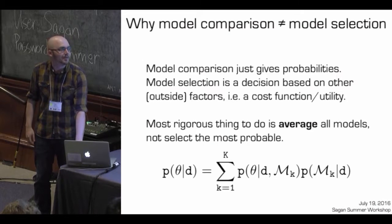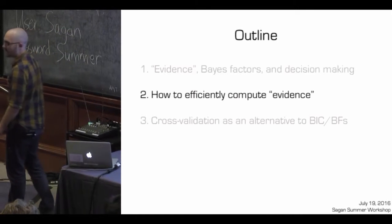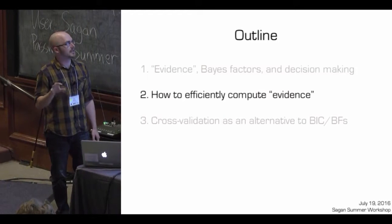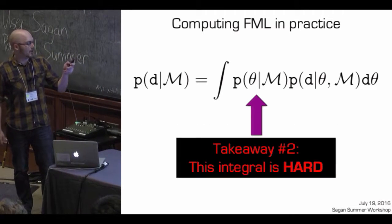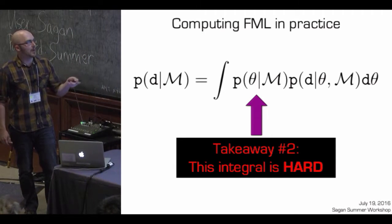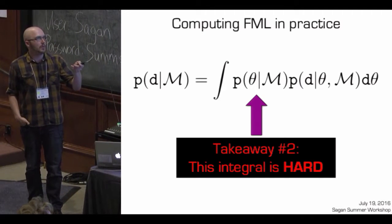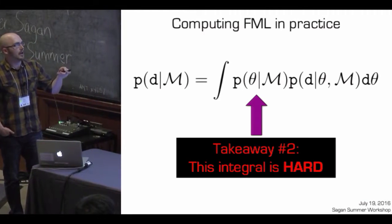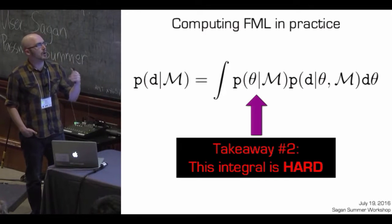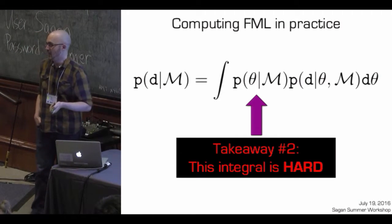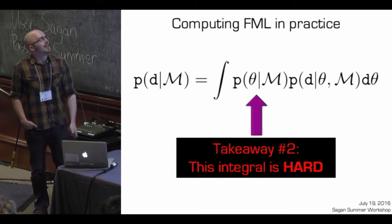Now let's look at how to efficiently compute some of these integrals. This is the integral we're trying to compute — it's over all d-theta. As Eric pointed out, this integral is very hard. If you only have one or two parameters maybe you can do it analytically, or use Monte Carlo integration. But once you get to three or more parameters — and some cases have thousands of dimensions — this integral becomes very, very difficult. That's why I like to call it the fully marginalized likelihood, because the acronym is FML and this thing is a nightmare to compute.